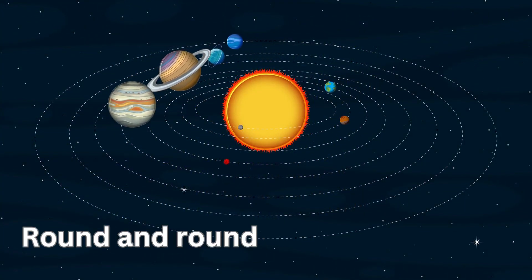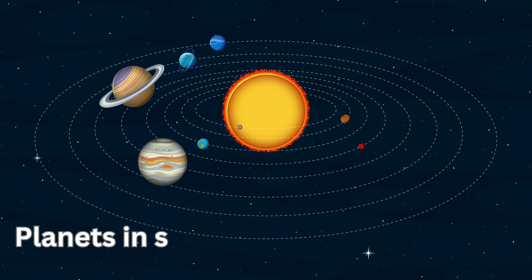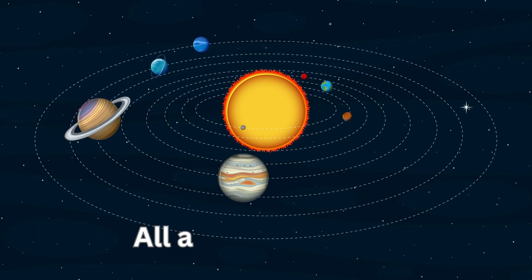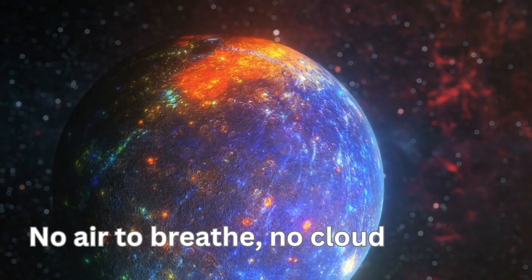Planets go round and round, round and round, round and round. Planets go round and round, all around the sun. No air to breathe.